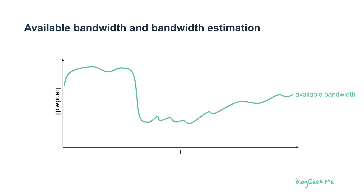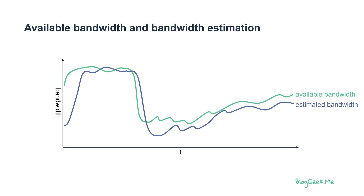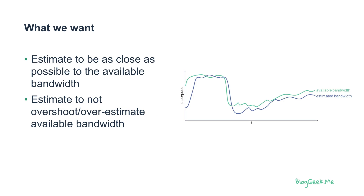What we're trying to do is understand how much available bandwidth we have, because this isn't a number that we can get off the network. We have this line here, which is our estimation of that bandwidth. We want that estimation to be as close as possible to the available bandwidth. If we make it too low, we're not going to use the bandwidth we have and call quality will suffer. On the other hand, we don't want to overestimate, because then we're going to hit congestion and packet losses, which are detrimental to the quality of our media.